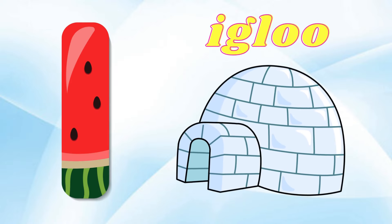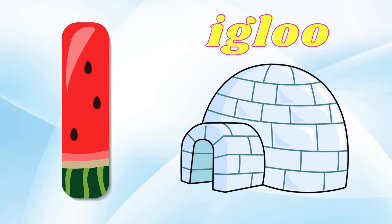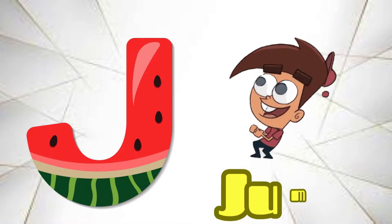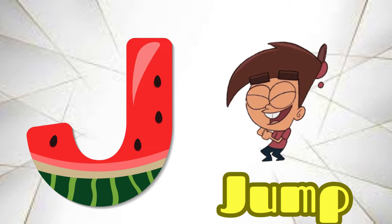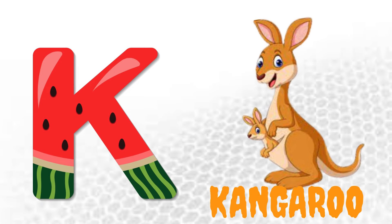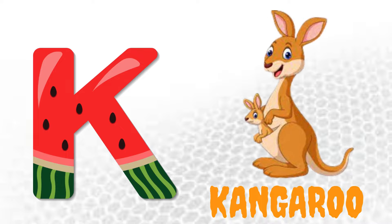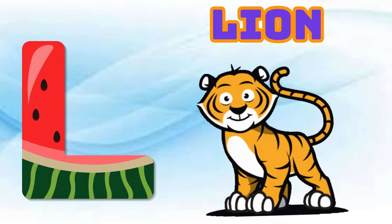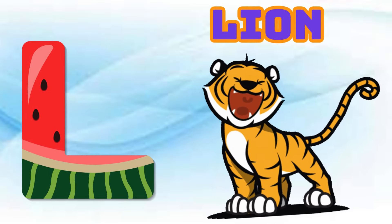I is for Igloo, I-I-I-Gloo. J is for Jump, J-J-Jump. K is for Kangaroo, K-K-Kangaroo. L is for Lion, L-L-Lion.